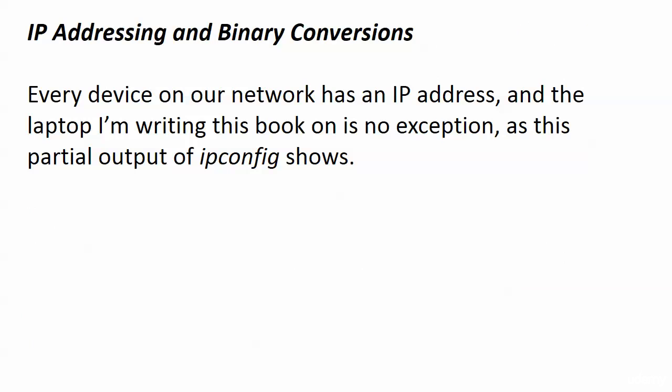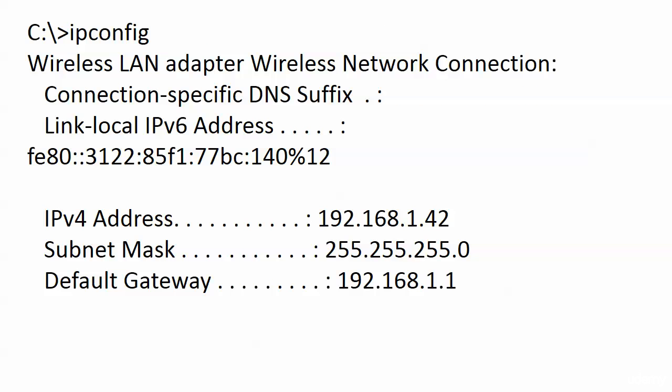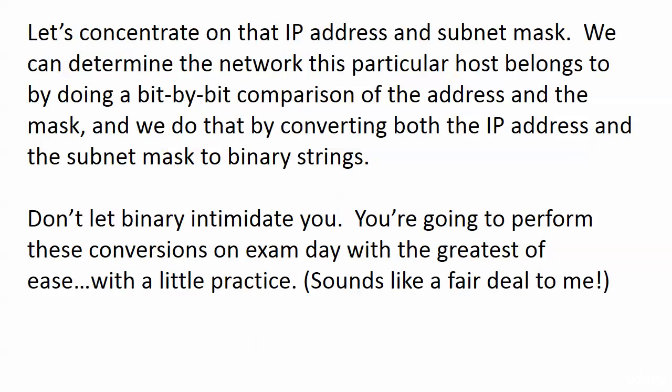First, we're going to tackle IP addresses and binary conversions, because every device on our network is going to have an IP address — the laptop I'm recording this on is no exception, as this partial output of ipconfig shows. ipconfig is a PC command, a Microsoft command, not a Cisco command. You can see we've got something called a link-local IP version 6 address, and then we've got some IP version 4 information at the bottom: the address, the subnet mask, and the default gateway. So what's going on with that subnet mask and default gateway?